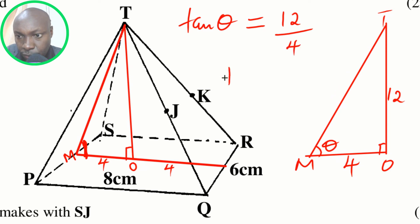The opposite, which is 12, over the adjacent, which is 4. So this will give tan theta to be 3. Tan theta will be 3.